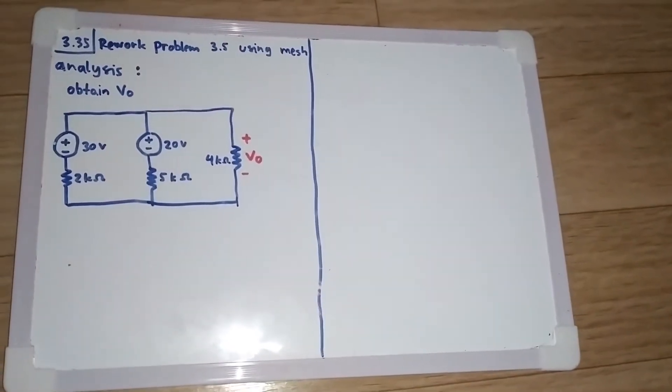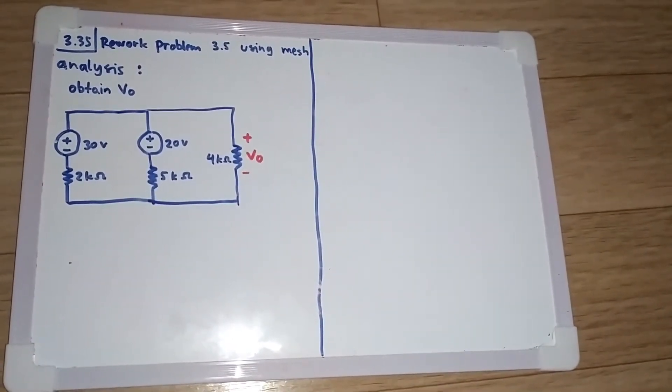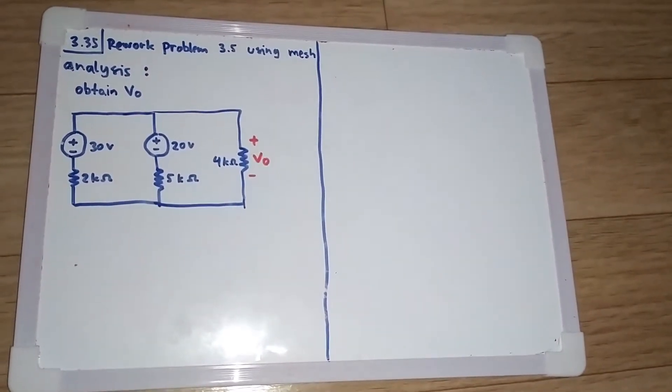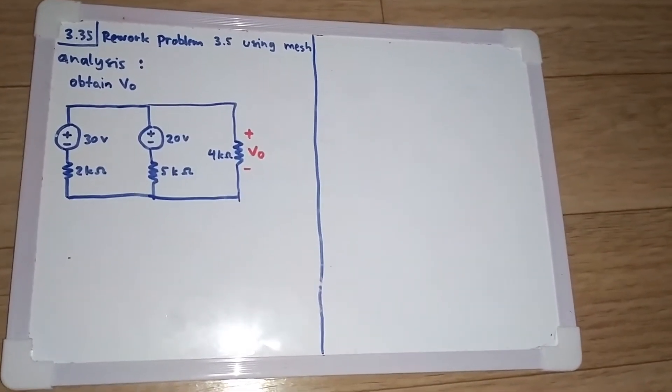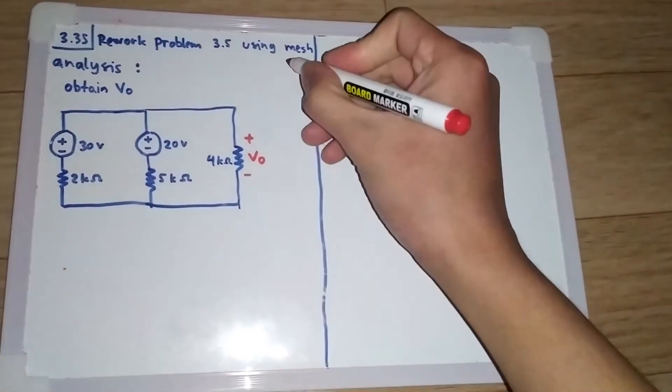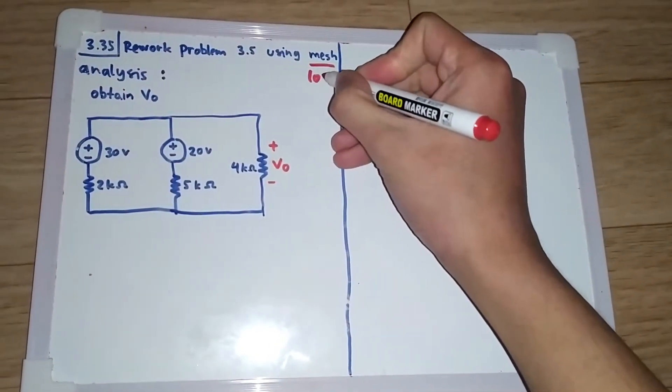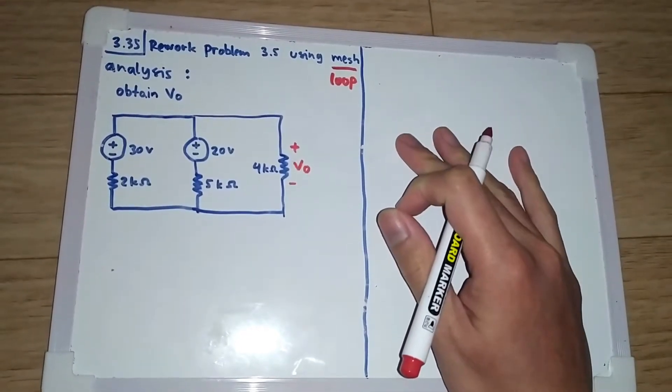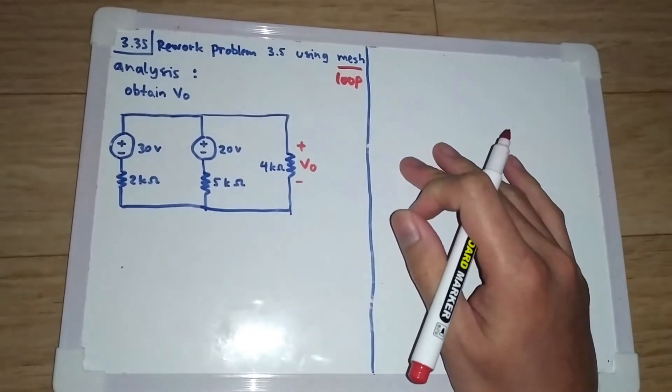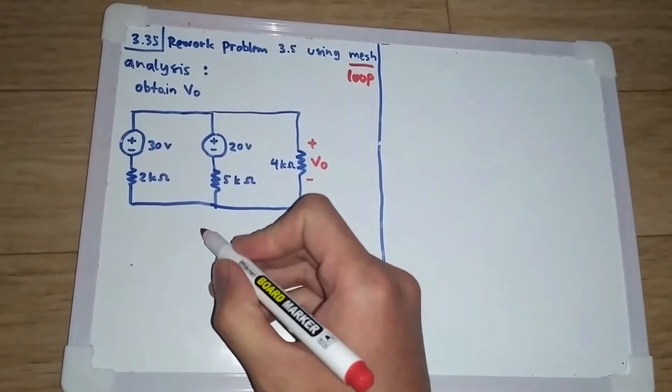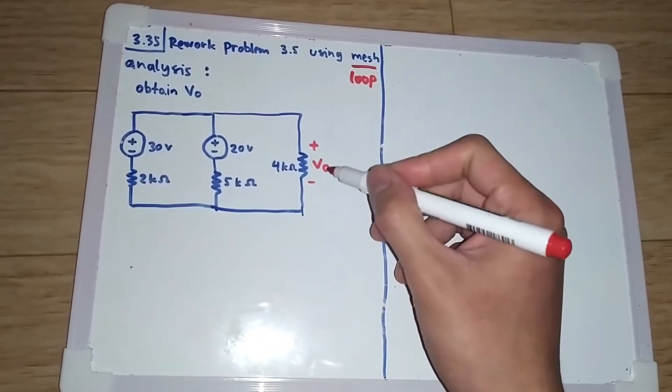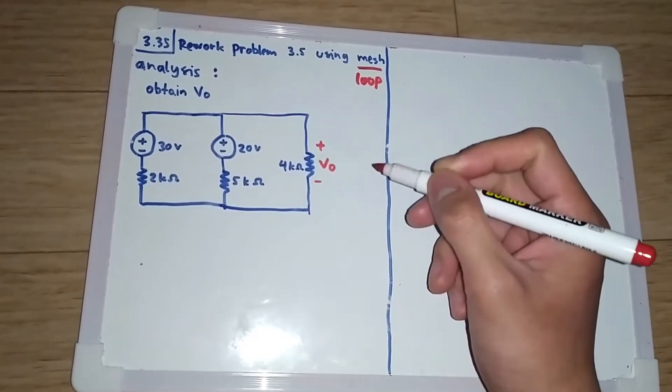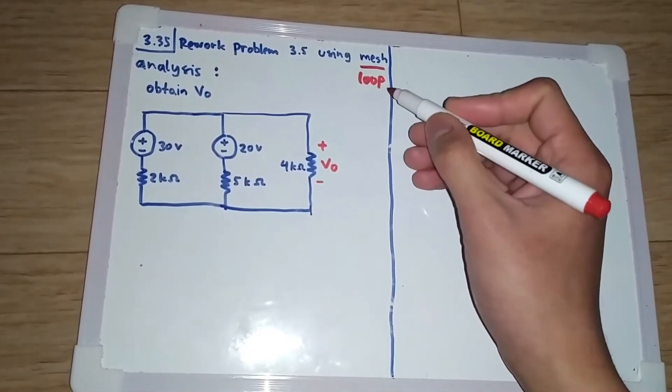This is problem 3.35 of Sadiku. The problem asks to rework problem 3.5 using mesh analysis. Mesh is also called loop, so loop analysis or mesh analysis are the same. This is the circuit here, and we are asked to find v0.